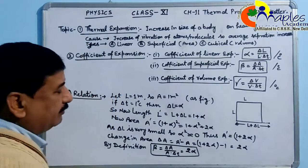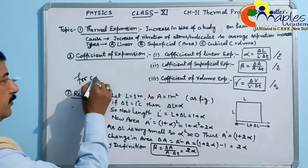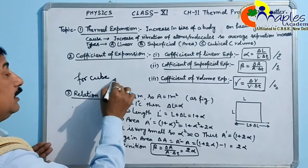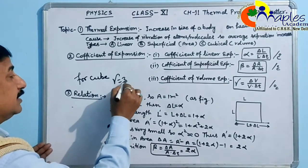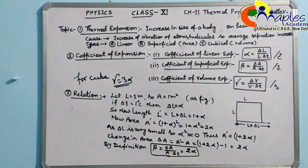Beta equals 2 alpha. Similarly, we can prove for a cube that the relation between alpha and gamma is gamma equals 3 alpha. Thank you.